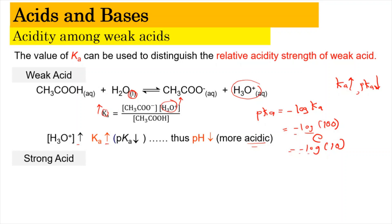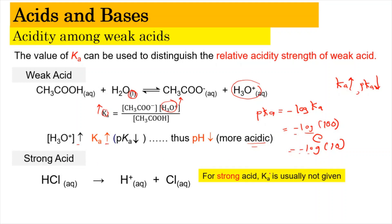Meanwhile, for the strong acid, we're going to have a single-headed arrow, which means that strong acid usually does not have any Ka value because it has 100% ionization. Ka can only be seen for the weak acid.